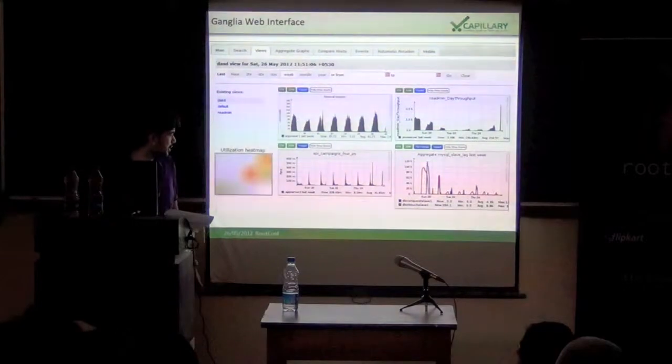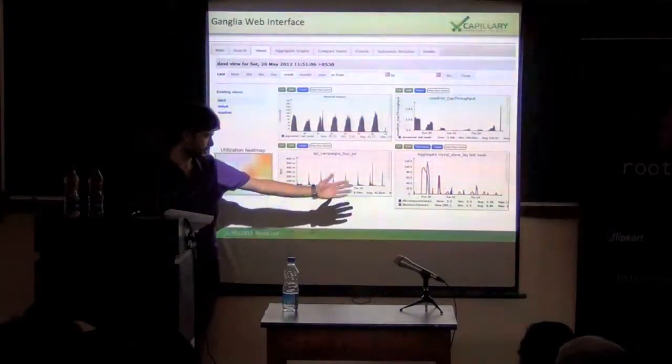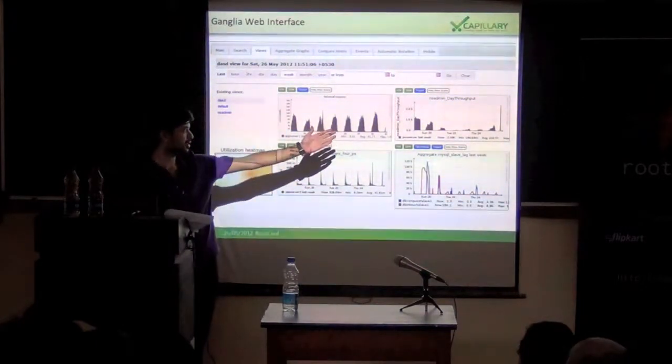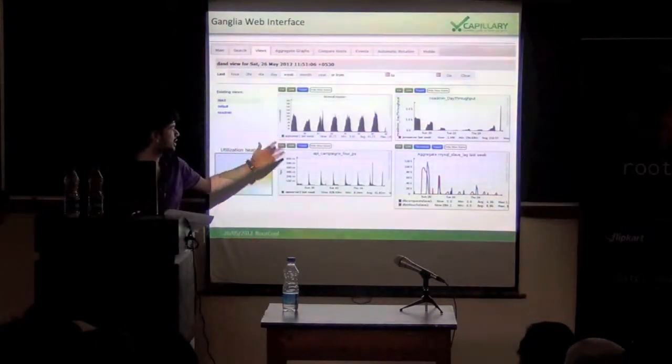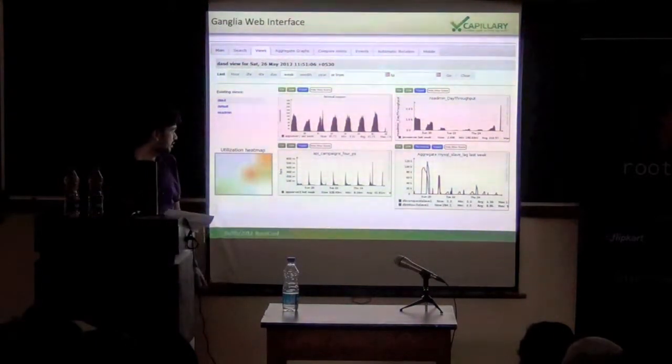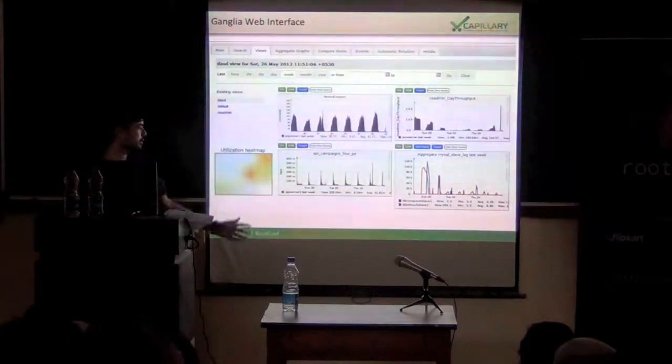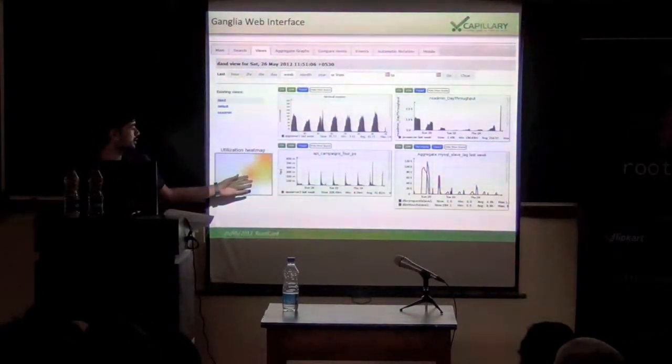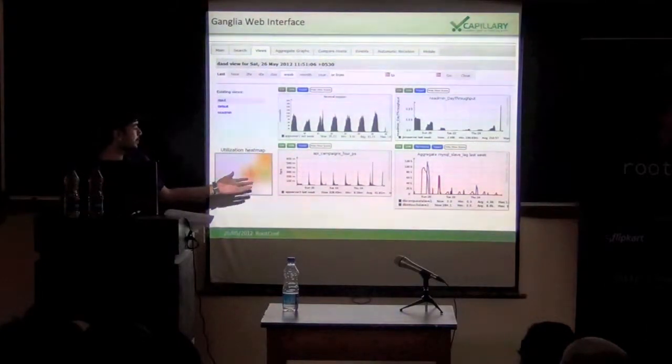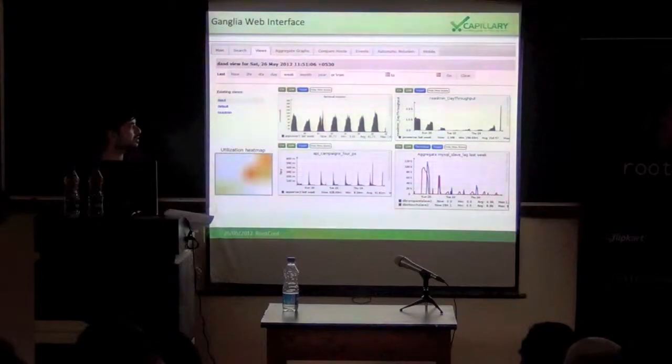This is the data collected for application server, MySQL server, our services and memcache server over a period of a week and this is the load utilization in that cluster. This will kind of get red when load utilization is maximum and be blue when it's zero, green when it's okay.